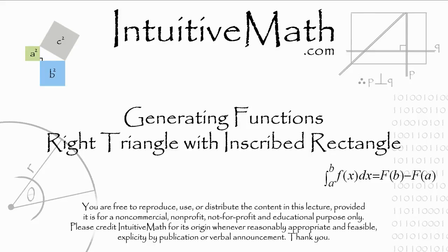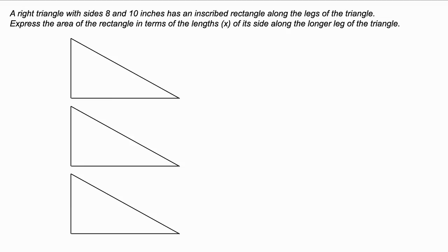Okay, welcome back. So I'm going to talk to you about generating functions, and the problem we're working with is a right triangle with an inscribed rectangle. We're given that a right triangle with sides 8 and 10 inches has an inscribed rectangle along the legs of the triangle. Express the area of the rectangle in terms of the length x of its side along the longer leg of the triangle.